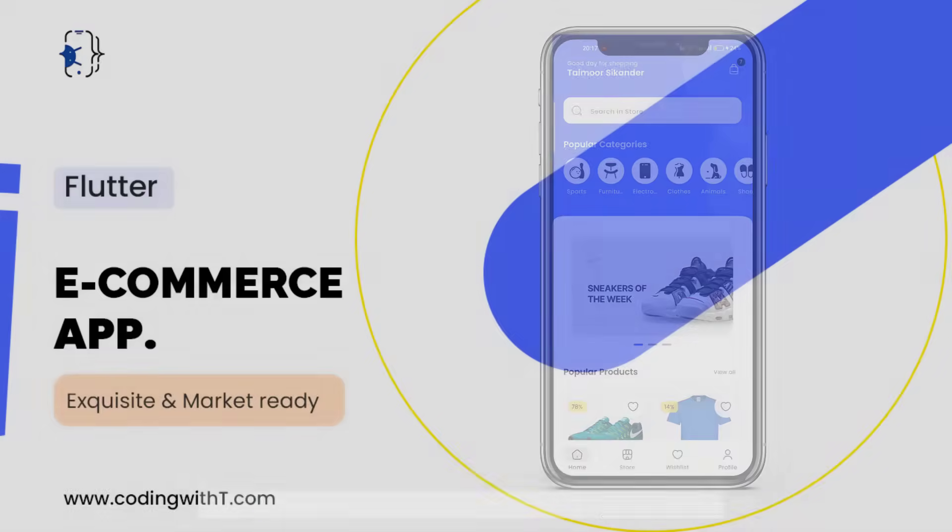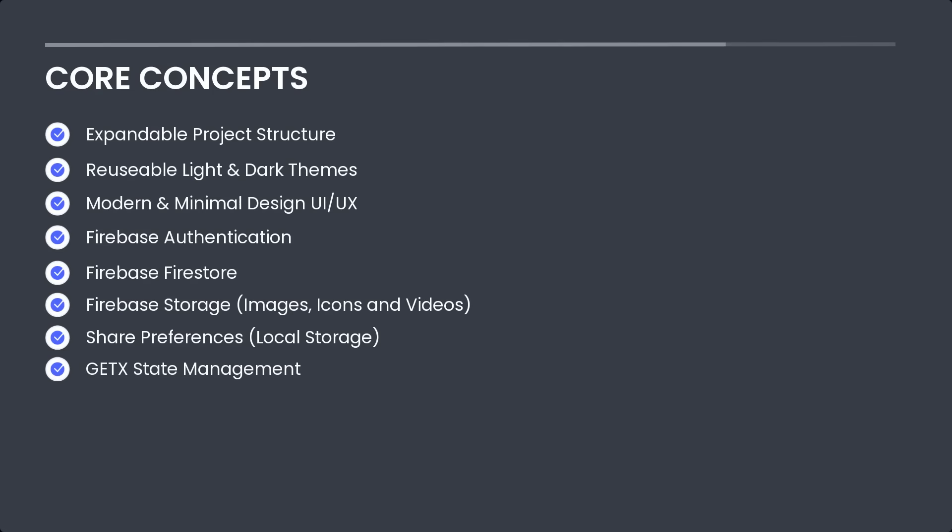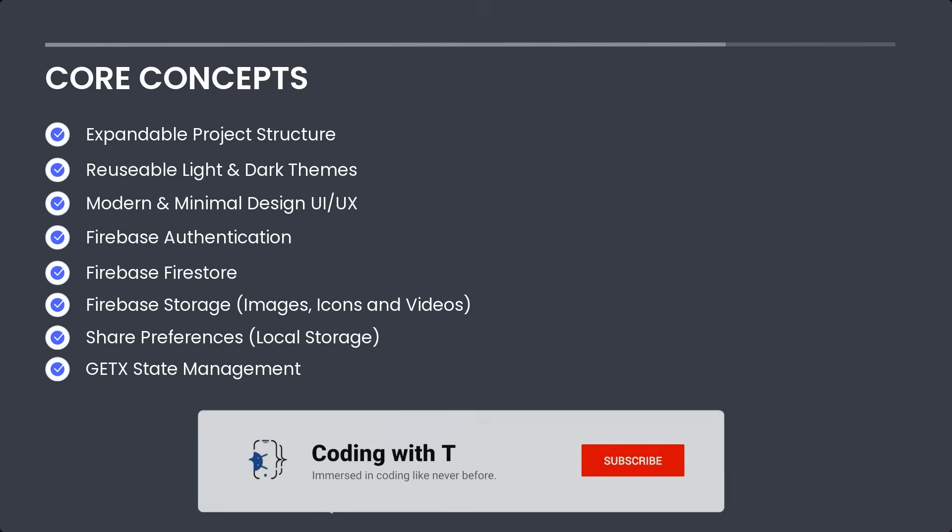You can download the code for this course from the description below, or go to Coding with T to download it. The core concepts we are going to learn include designing an expandable folder structure — including pubspec, images, and icons — that you can use to build any type of application at any level. We will also create reusable light and dark themes stored in a folder you can copy into any application that requires them. Then we'll cover Firebase authentication, Firebase Firestore, Firebase Storage, GetX state management, and GetX Storage or shared preferences for local storage.